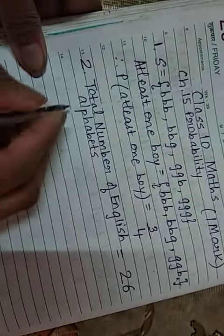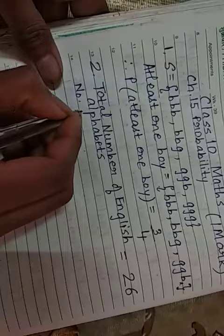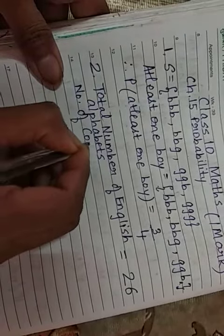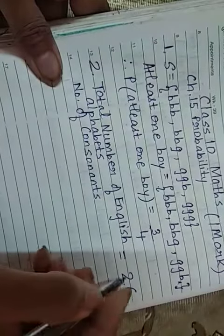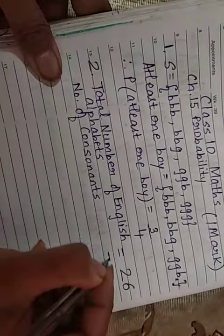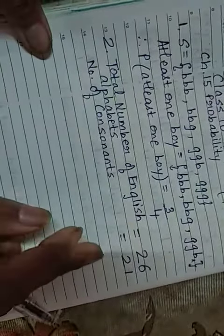Right? Now, I am giving here a short form of number. Number of consonants. Number of consonants which is equal to consonants are 21. Right? And vowels are 5.